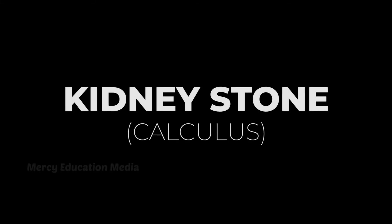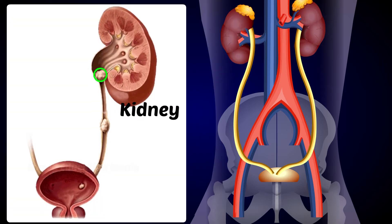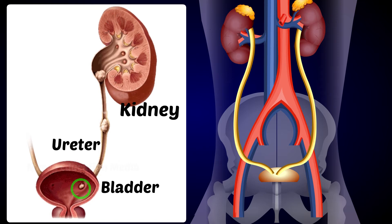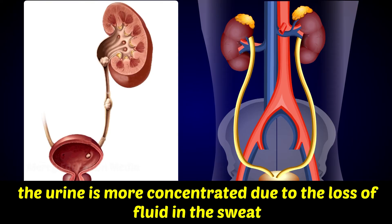Calculus, or stone formation in kidneys, ureters, or bladder, is caused by the precipitation of substances from urine. Kidney and ureter stones are more common than bladder stones. The incidence of stone formation is highest in summer months, as urine is more concentrated due to fluid loss through sweat. Chronic dehydration is the main cause of kidney stones.